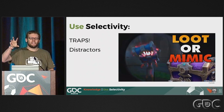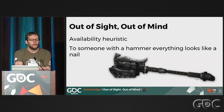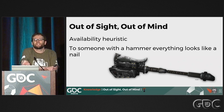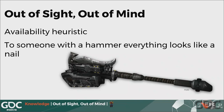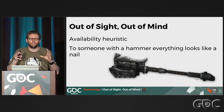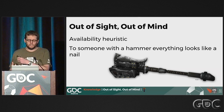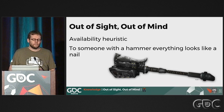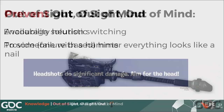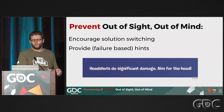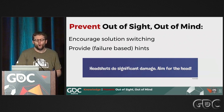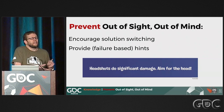Out of sight, out of mind — also called the availability heuristic — is simply that the things that come easiest to mind when encountering an issue are what we think are most important. To someone with a hammer, everything looks like a nail. Players will use the tools you give them, and unless it's very clear it's not hammer time, they'll stick with it. To prevent it, encourage solution switching by mixing up enemy types or making certain things immune. Or provide failure-based hints — pop up 'enemies that are red take more damage from ice items,' whatever you want players to think about.